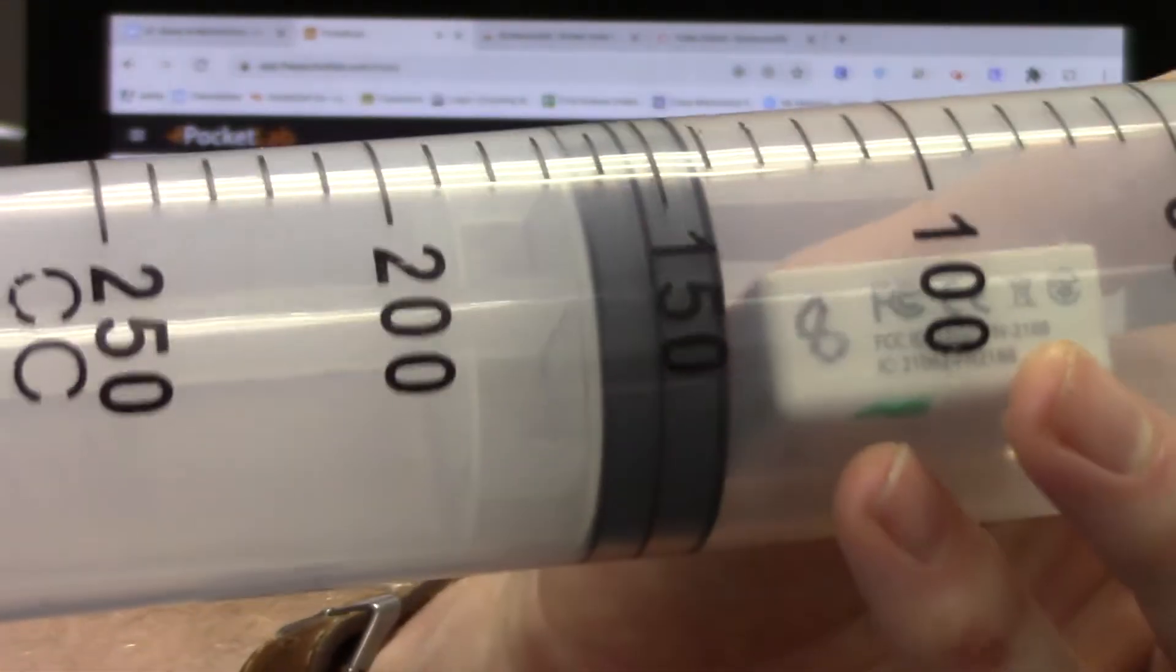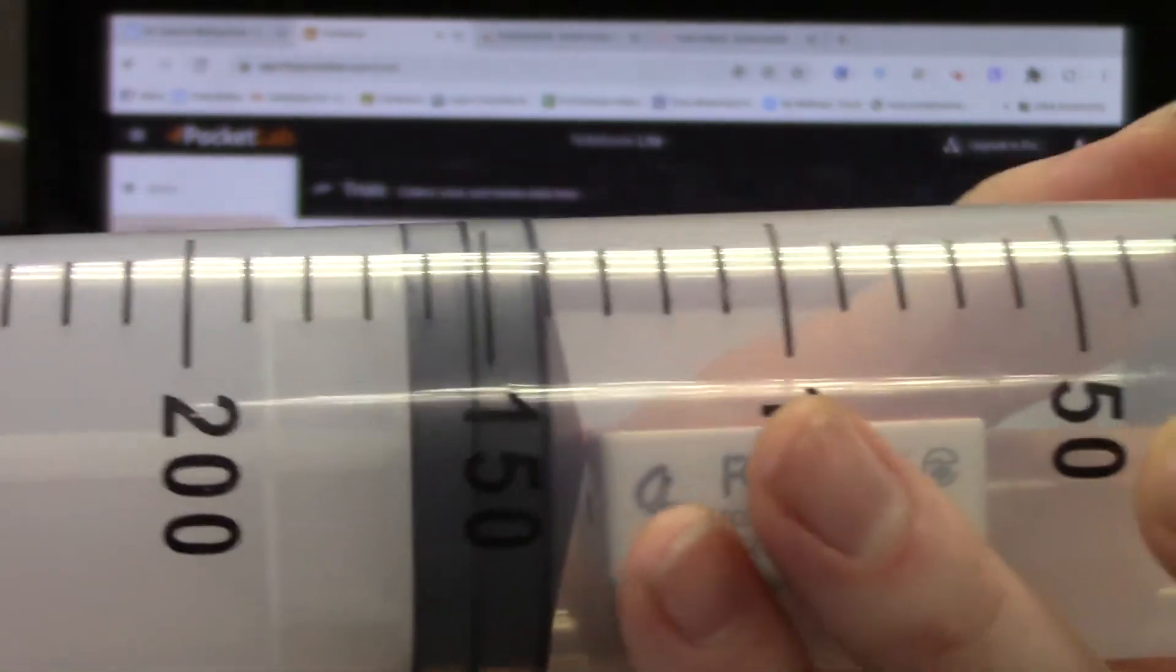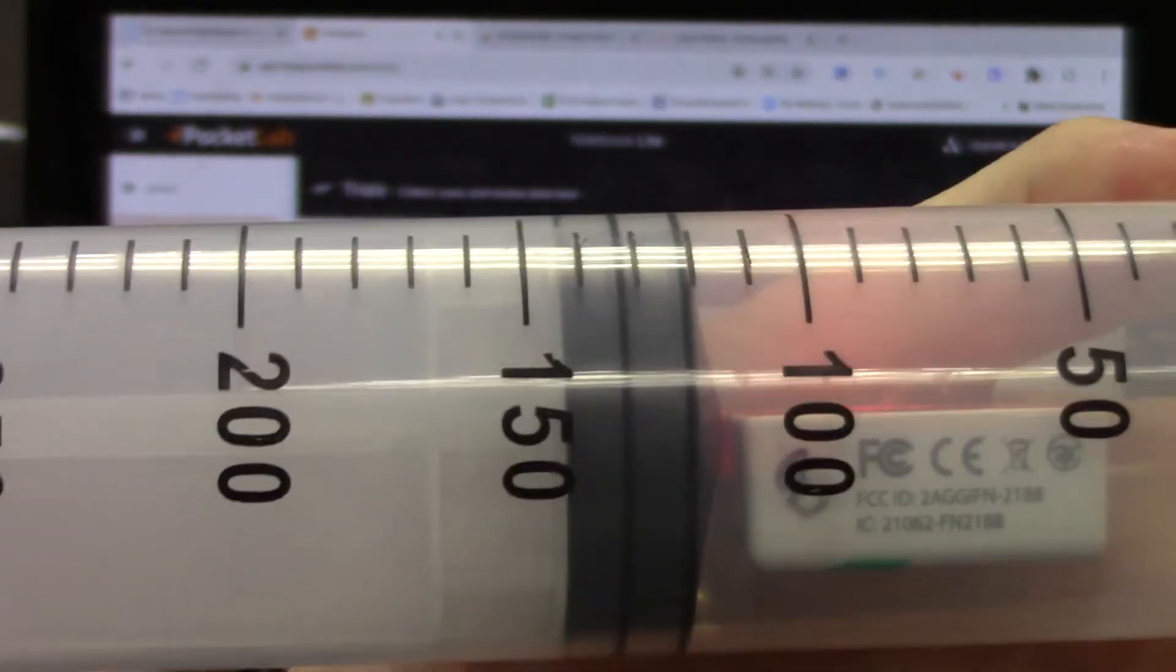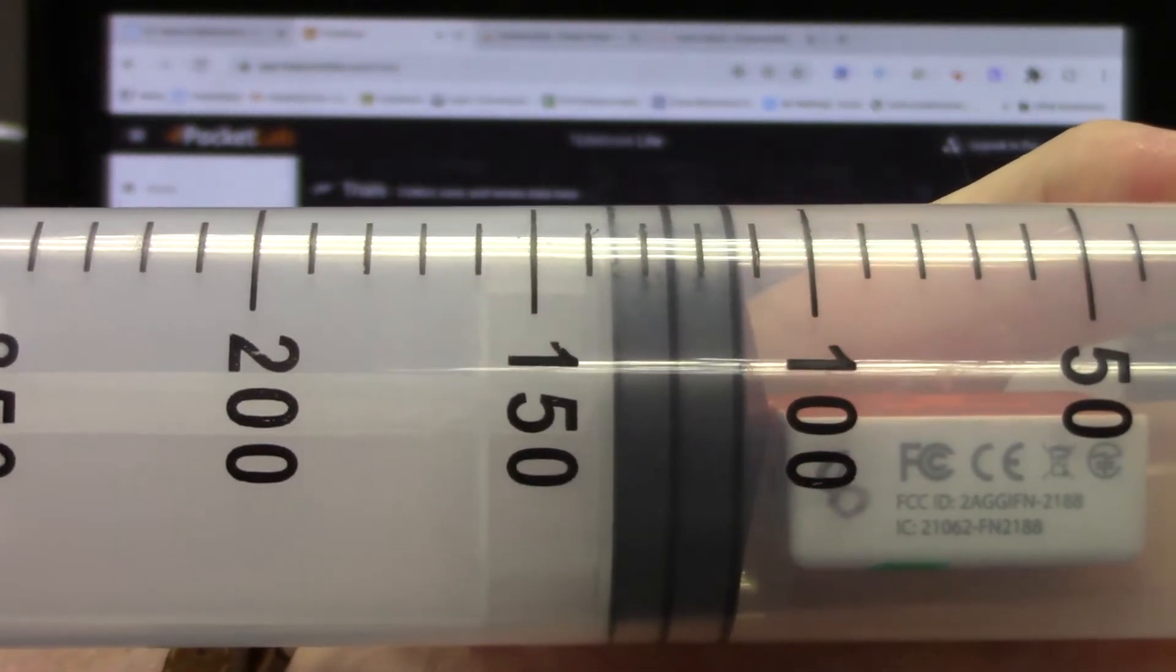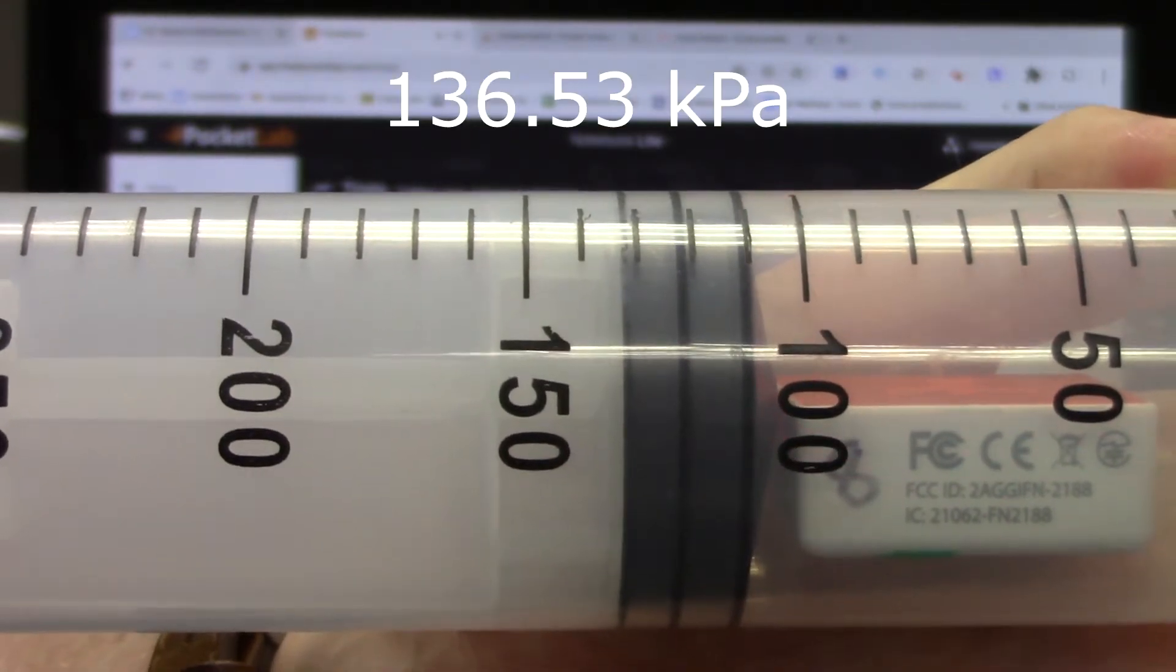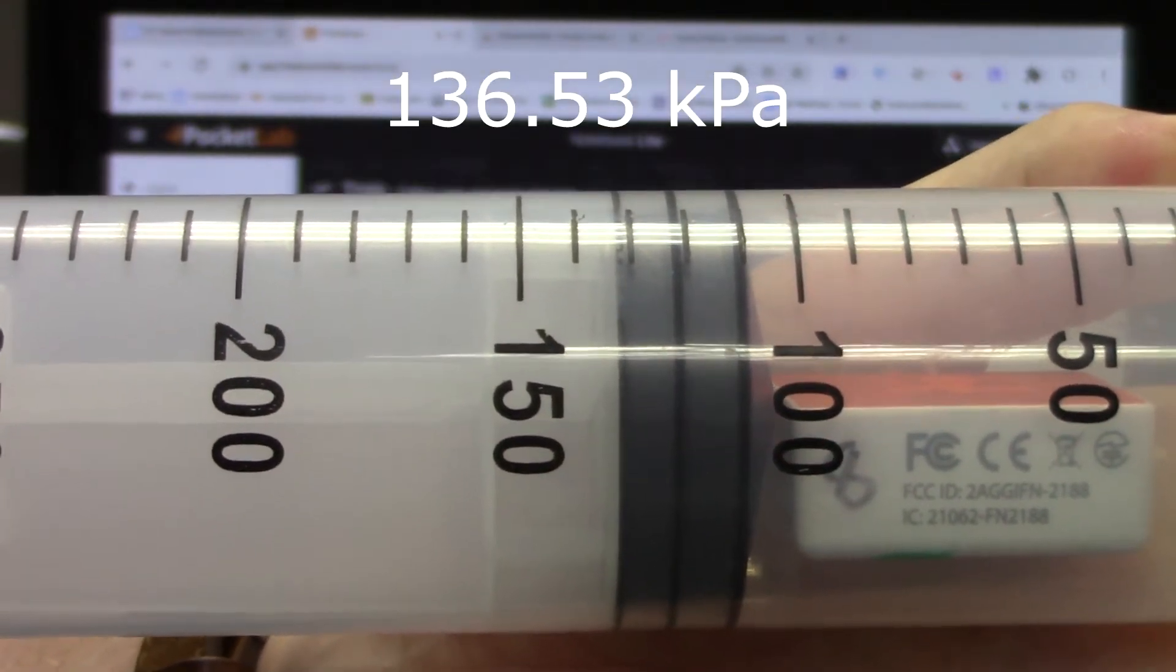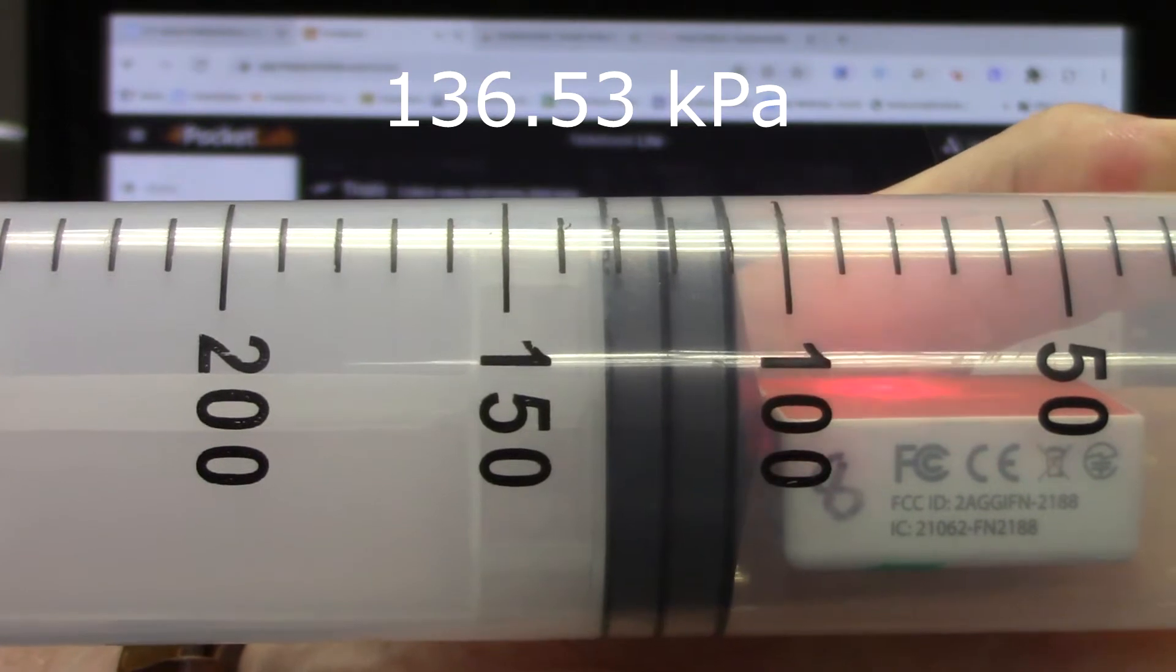So we're going to push down on the syringe. And these units, by the way, are cc. That means cubic centimeters or milliliters.